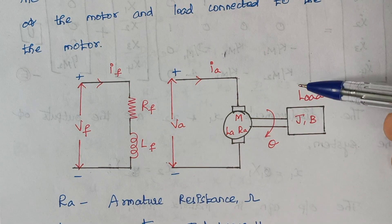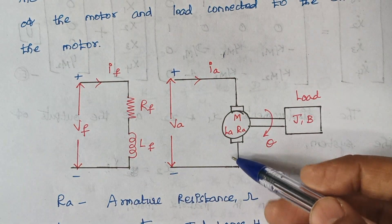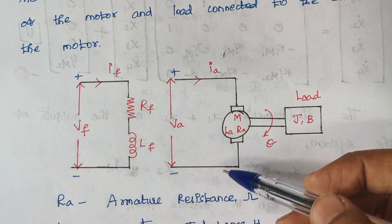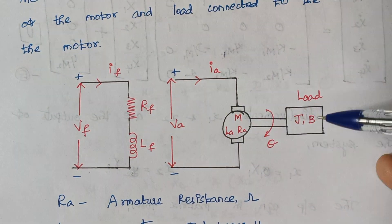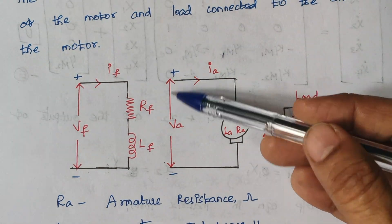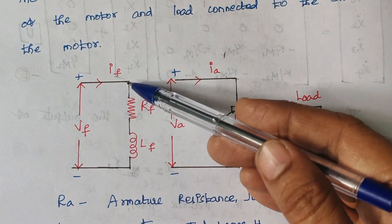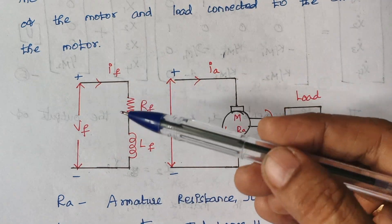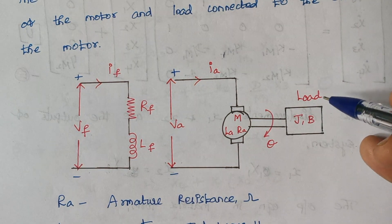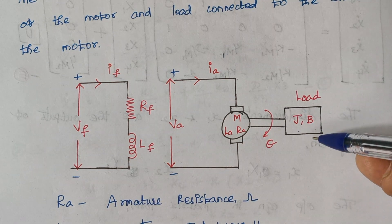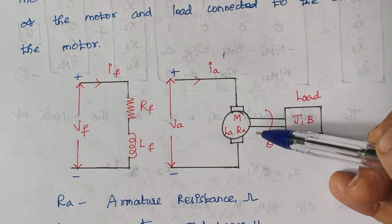This is the typical diagram. I hope you are familiar with this, because we already discussed these things in Chapter 1. This forms the field circuit and this forms the armature circuit. Only to the armature part is the load connected. Here VA is the armature voltage and IA is the armature current. VF is the field voltage and IF is the field current. The load is highlighted by its basic elements — moment of inertia and the dashpot.